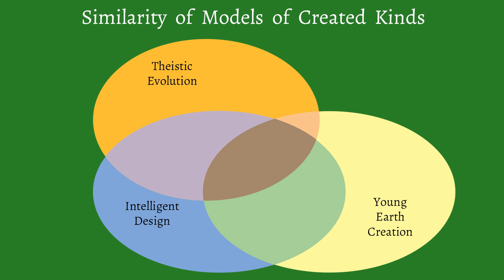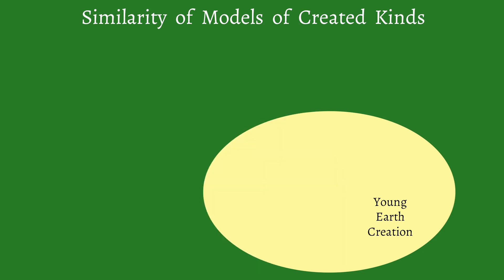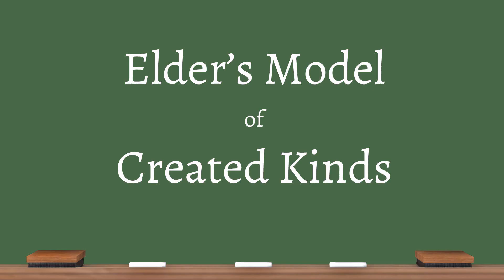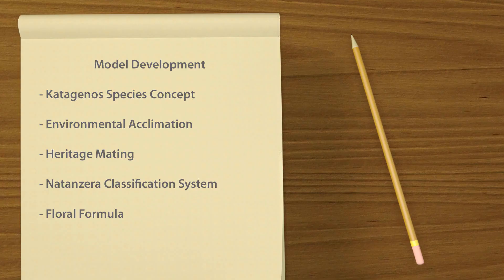Even if we just focus on the young earth version of created kinds, there can be small variations between models. Therefore, to distinguish what I am about to present from other models, I will label this Elder's model of created kinds, because this is the model I am using to make predictions and testing. The differences from other young earth creationist models is largely the concepts I am personally developing and testing, and hope to have further reviewed and accepted by the entire creation community in the coming months and years.